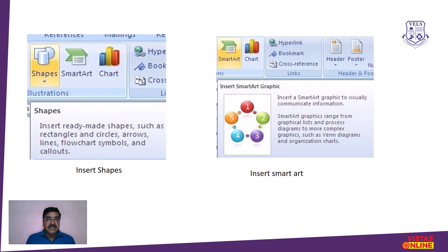Different shapes are available: rectangle, circle, arrows, lines, flowchart symbols, and callouts. Shapes are also used to construct a flowchart, in which diagrams are drawn and arrows show the flow method. Insert SmartArt graphics allows graphical files to be inserted within the documentation as well.